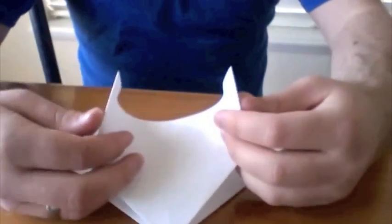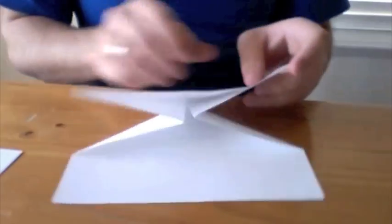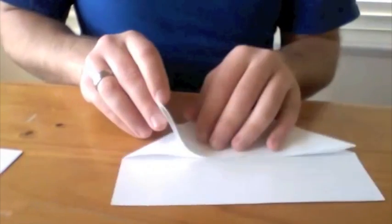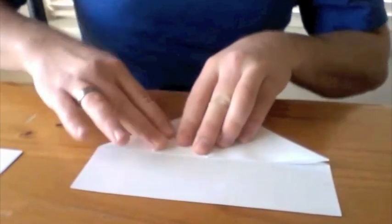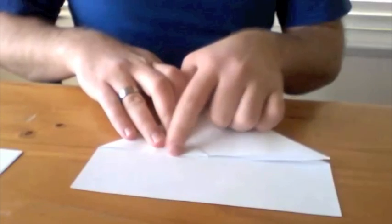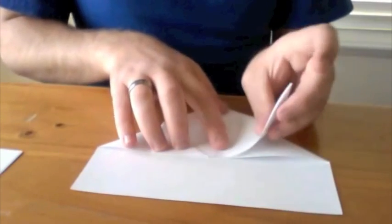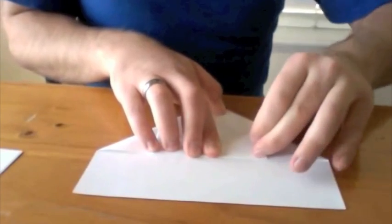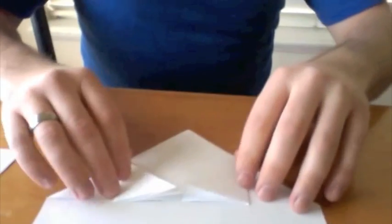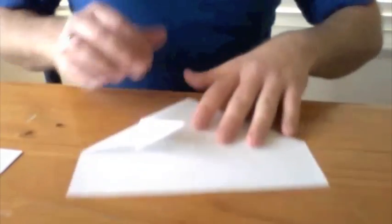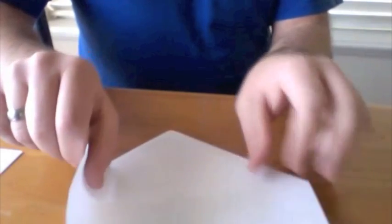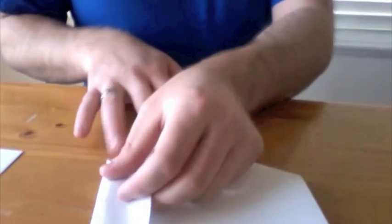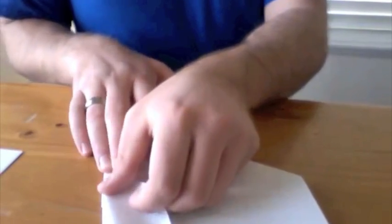And then I take these two resulting pointy flaps here, and I'm going to have them meet in the middle along the roof line, if you will. And then I'm going to flip the entire thing over and do the same thing to these bigger edges and have them line up with the fold that I just made on the other side.